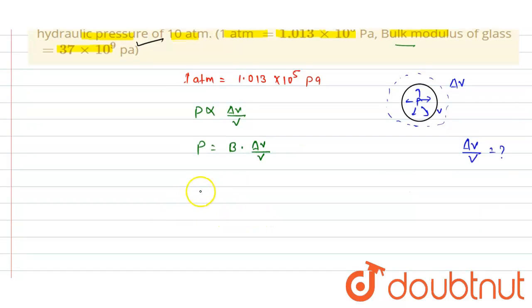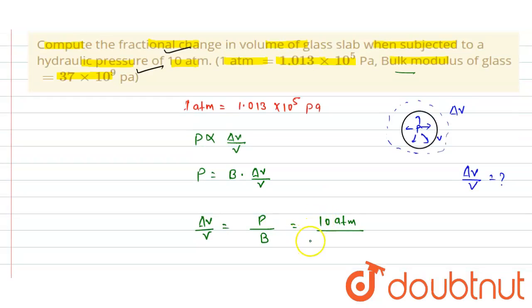So we can write that the fractional change delta V/V equals P divided by bulk modulus. P is given as 10 atm divided by B. The bulk modulus is 37 × 10^9. We know 1 atm equals 1.013 × 10^5, so this is 10 × 1.013 × 10^5 divided by 37 × 10^9.